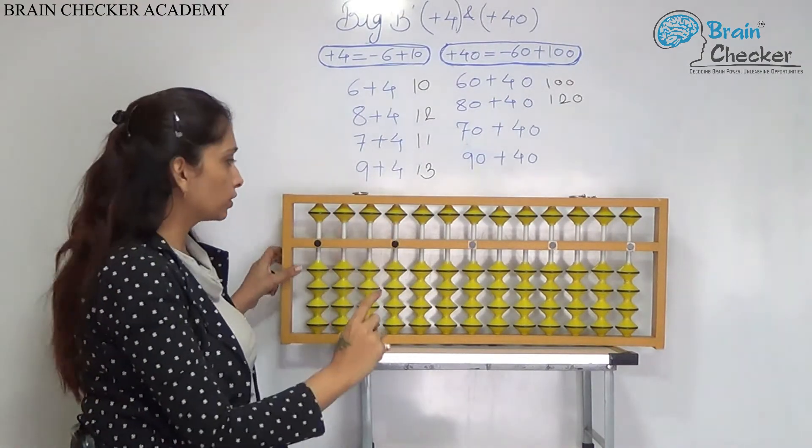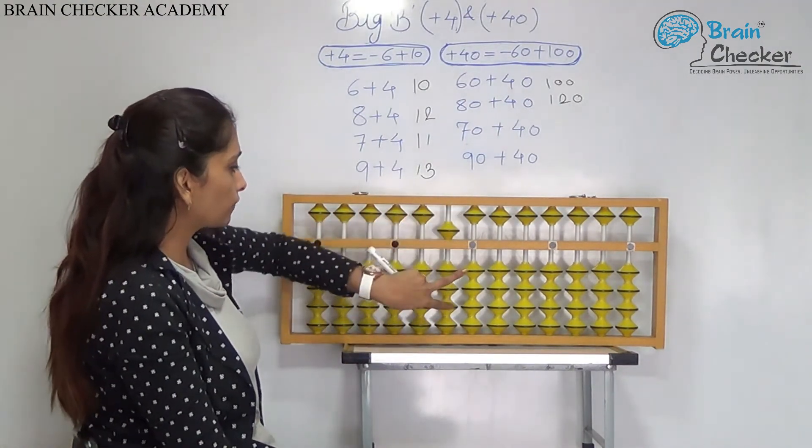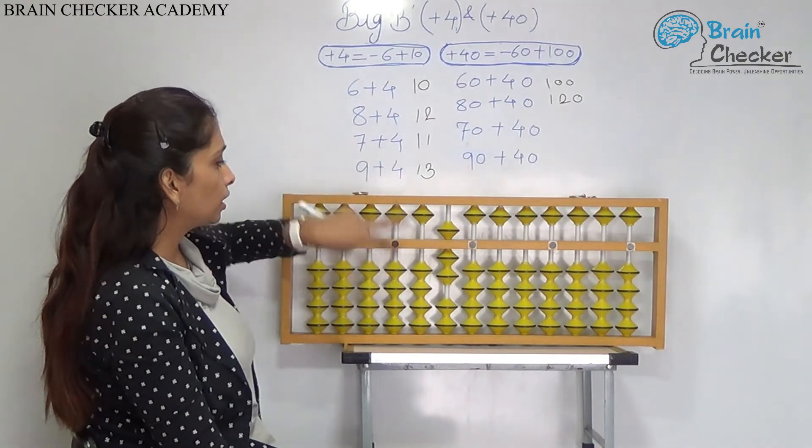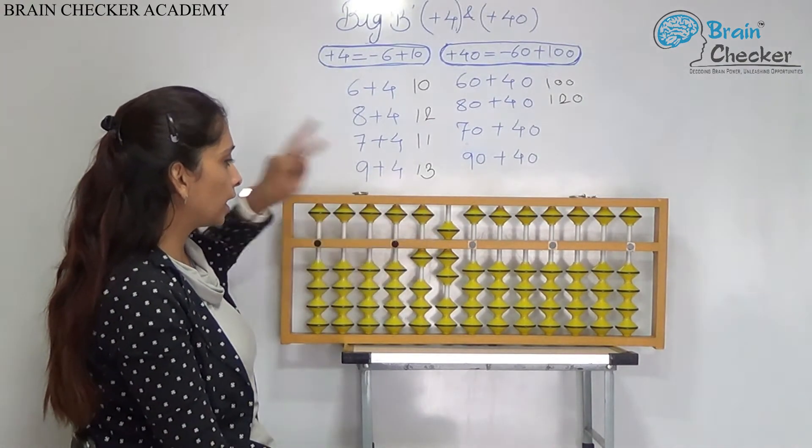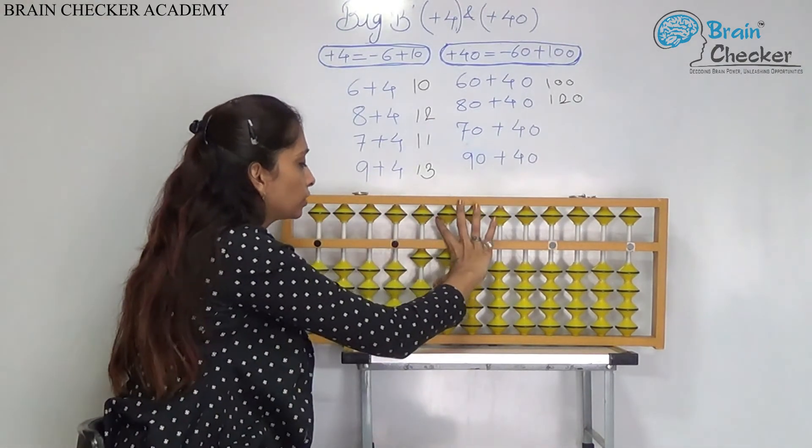Next, 70 plus 40. Again, on the 10th rod, I have taken the 70 add 40. I have used the formula add 100 less 60. So, the answer is 110.